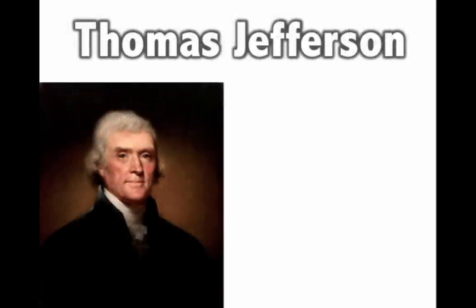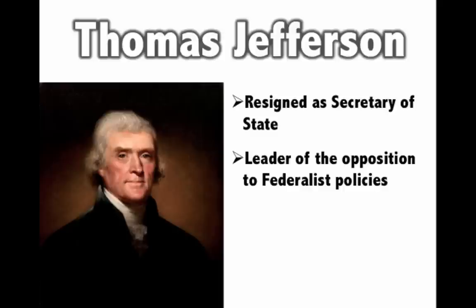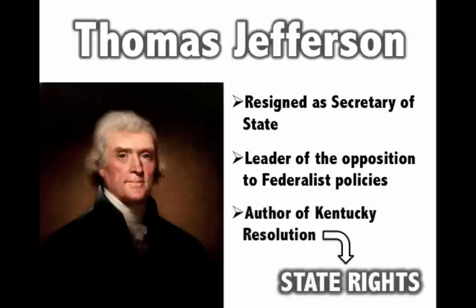Keep in mind some things about Thomas Jefferson you may not know. He was the Secretary of State under George Washington — he resigned and became the leader of the opposition to Federalist policies, especially Hamilton's economic programs like the bank. He was also the author of the Kentucky Resolution. There were the Virginia and Kentucky Resolutions: James Madison wrote the Virginia one, and Jefferson wrote the Kentucky one. They basically asserted states' rights — that if the federal government acted unconstitutionally, the state could nullify and ignore that law within Kentucky or Virginia.